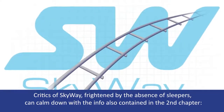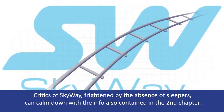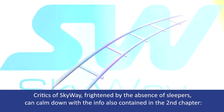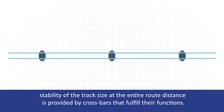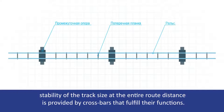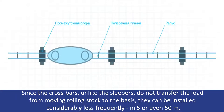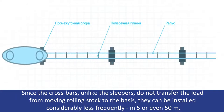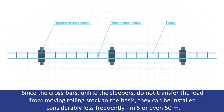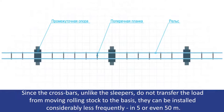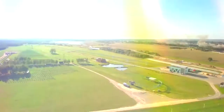Критиков SkyWay, напуганных отсутствием шпал, может утешить информация, также содержащаяся во второй главе. Стабильность размера колеи трассы на всём её протяжении обеспечивают поперечные планки, которые и выполняют функции шпал. Поскольку планки, в отличие от шпал, не передают нагрузку от движущегося подвижного состава на основание, они могут быть установлены значительно реже — через пять или даже пятьдесят метров.